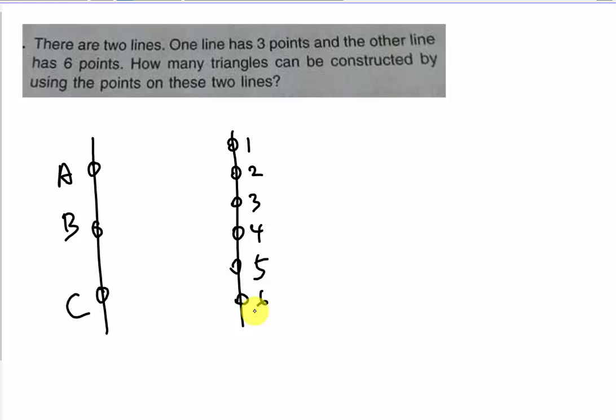Before you start constructing triangles, you have to think: is this permutation or combination? In this case, all the points look exactly the same, so it's impossible to use permutation. Permutation is used for letters or numbers where each is unique and arrangement matters. Since all the points look alike, this is combination, so I'm going to use nCr.